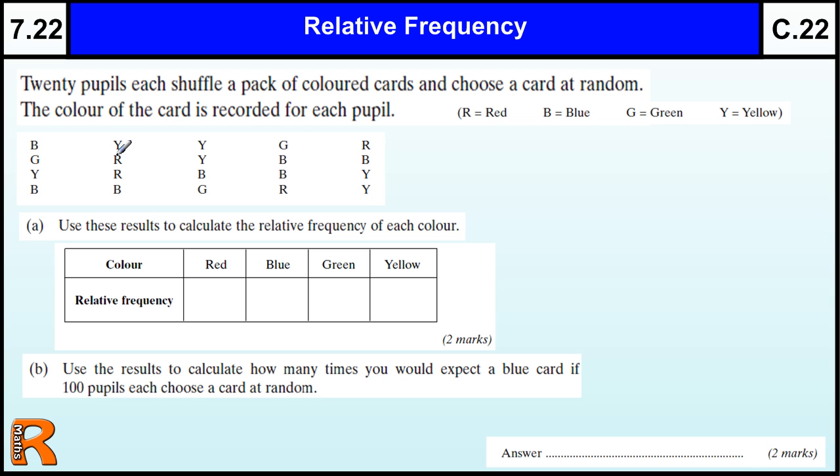An experiment was done to choose a card at random from a pack of cards that got colors on, and this is what happened. I'm guessing the cards were replaced before they were selected again. So, we need to work out how many of each color there is.